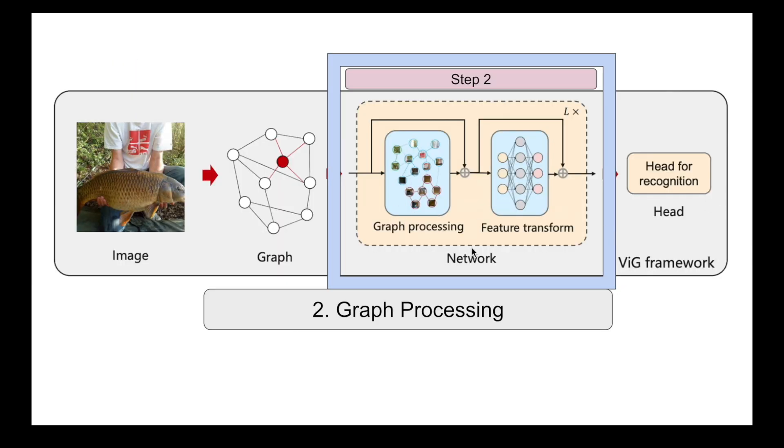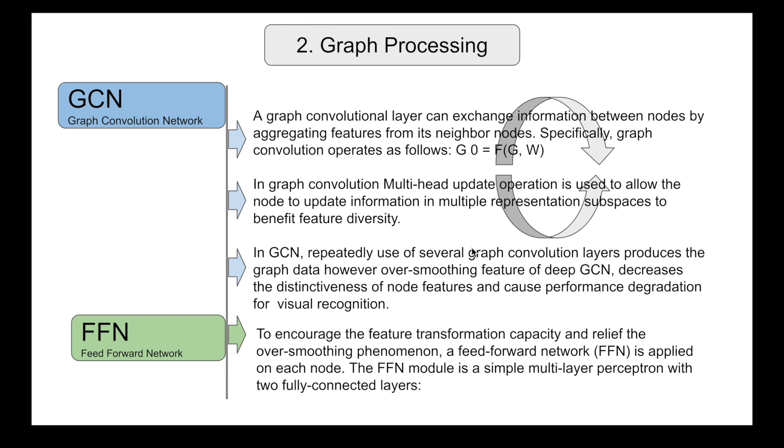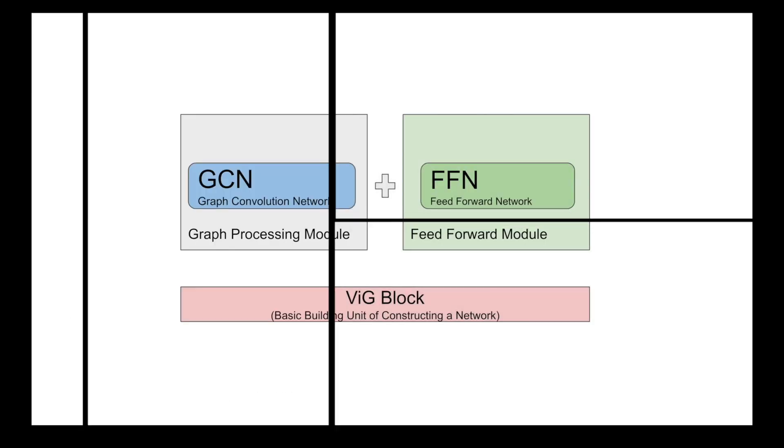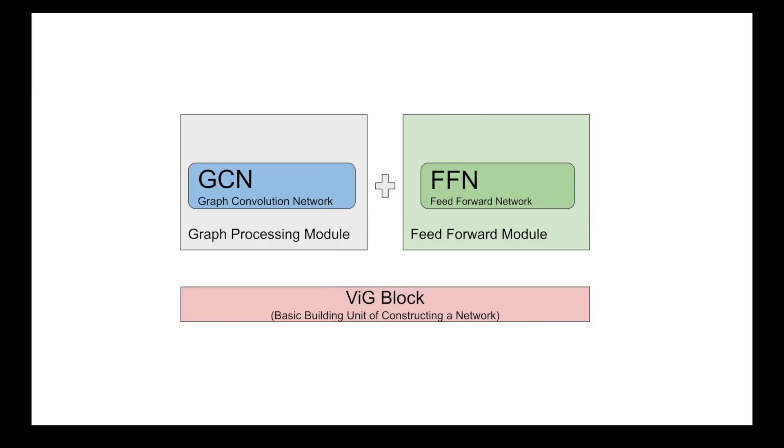So the combination of graph convolutional neural network and the FFN is what is being explained here. So this is what generates your graph neural network. We could say the combination of graph processing module and the feed forward module is what defines a VIG block, and that is the basic building unit of network construction.